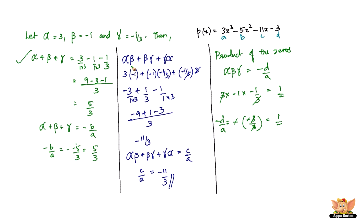This ends the problem. The steps are the same as problems based on the relationship between the zeros and coefficients of a quadratic polynomial — nothing different, just remember the relationships. This is a cubic polynomial, so we have one extra zero and three things to verify as opposed to two in the quadratic case. I'll see you in forthcoming videos with more problems based on the relationship between the zeros and coefficients of a cubic polynomial.